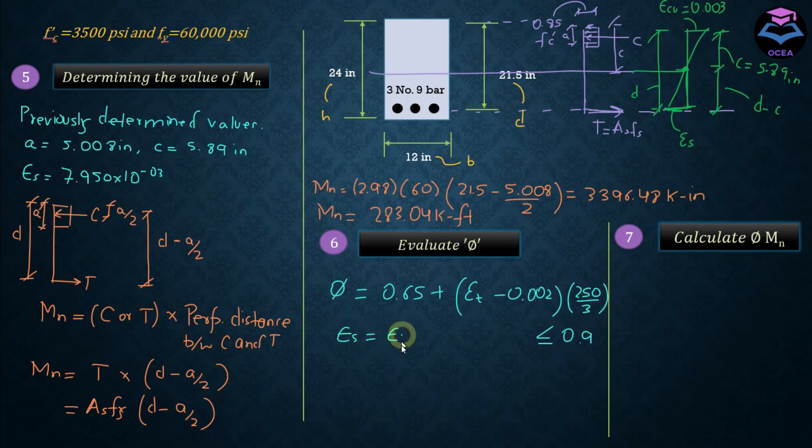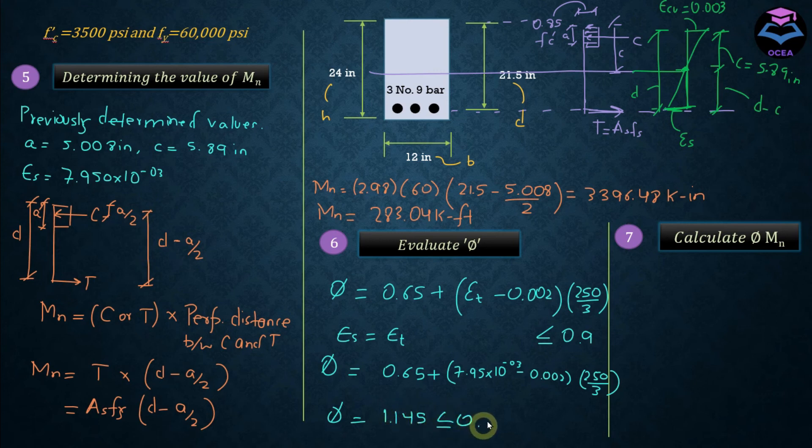So phi from here, if we substitute this epsilon s value into this equation, is equal to 1.145, and it means that phi should be equal to 0.9 for this question.